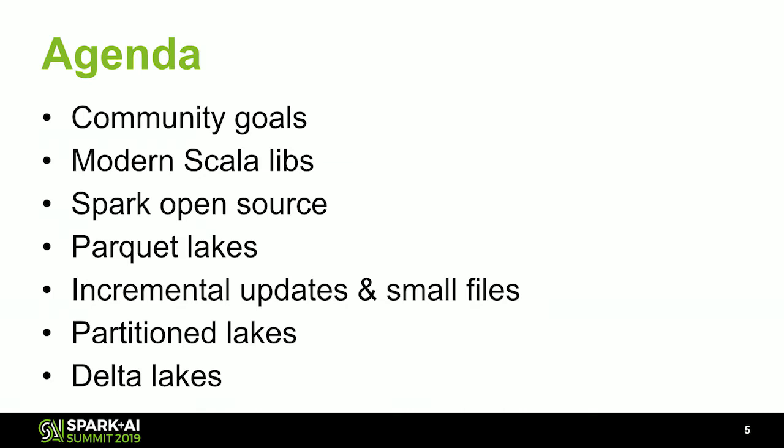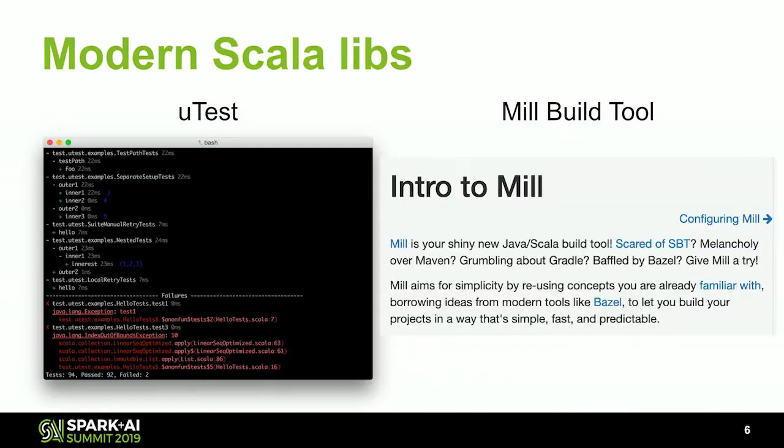So here's a more detailed agenda. We'll talk about some community goals. We're going to quickly cover some modern-scale libraries that make me really excited. Then we'll talk about some Spark open source libraries I've developed. Then we'll move on to the data lake portion — chatting about Parquet data lakes, incremental updates, and how that causes the small file problem and how to rectify it using compaction. Then we'll chat about partition data lakes and the unique challenges posed by incremental updates, and we'll wrap it up with some chats about delta lakes.